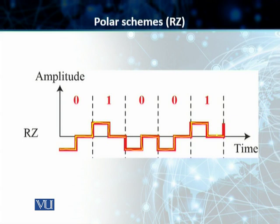So we are essentially using three different voltage levels as compared to the NRZ techniques. The main disadvantage of this encoding is that it requires two signal changes to encode one bit. We are having two changes in the signal to represent one bit, and this essentially means that we are occupying greater bandwidth as compared to the non-return to zero techniques.